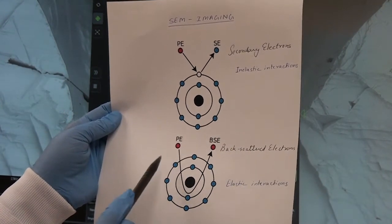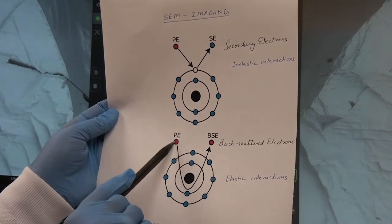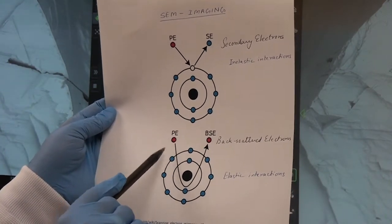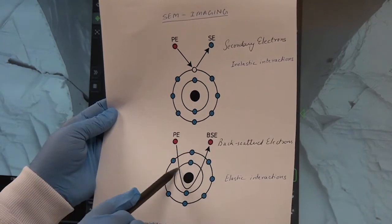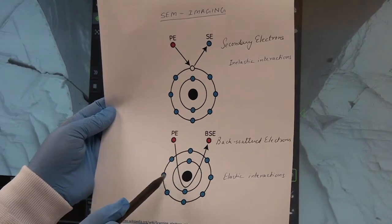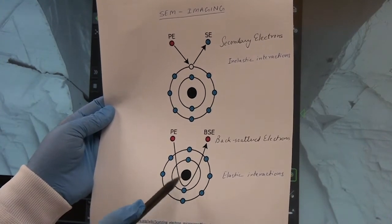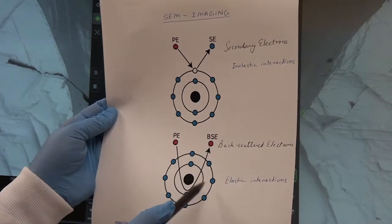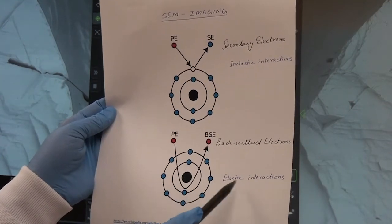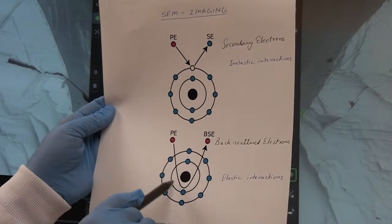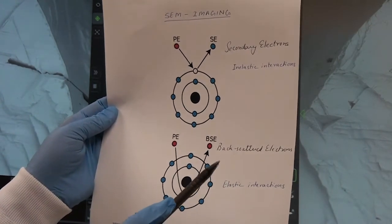In case of backscattered electrons, the high-energy electron beam penetrates deep into the sample surface, but they do not hit any electrons of the sample atoms and are just bounced off or backscattered by the sample atoms. In such elastic interactions, they produce backscattered electrons, and these depend upon the size of the sample atoms.